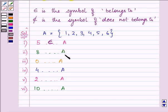Proceeding on, is 8 an element of A? The answer is no. That means it does not belong to A. Similarly, 0 does not belong to A. 4 belongs to A. 2 belongs to A. But 10 does not belong to A.